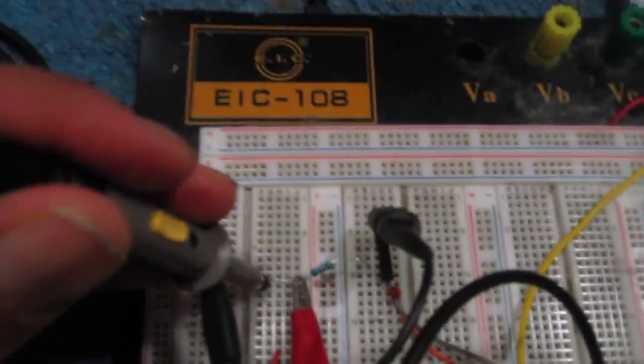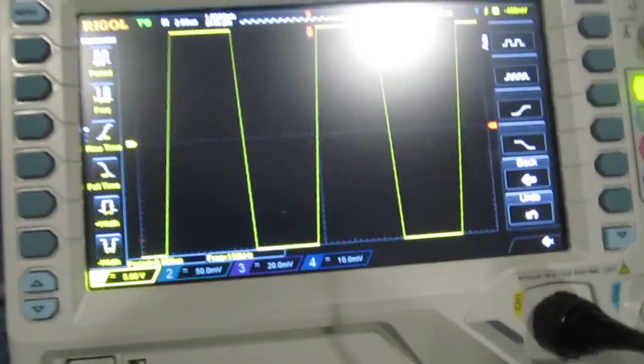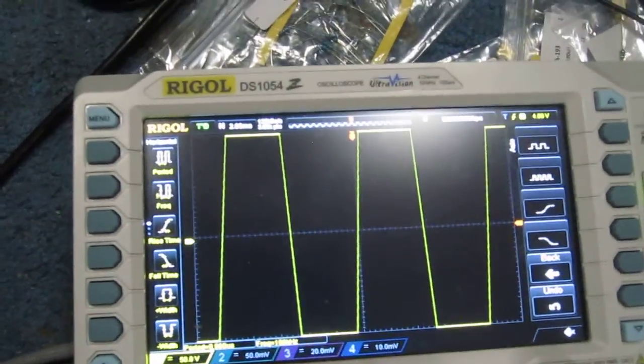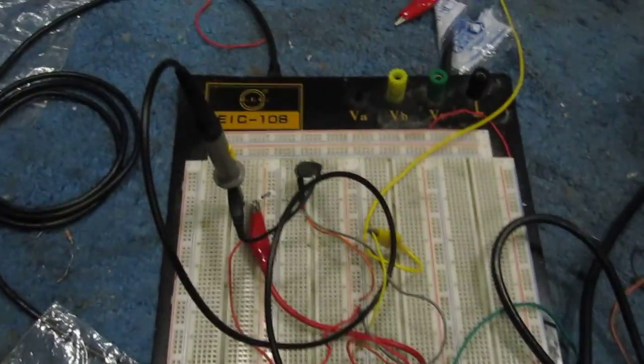The function generator is on triangle waveform mode. When I connect the oscilloscope probe to the input and adjust the waveform, you see a triangle waveform at the input.